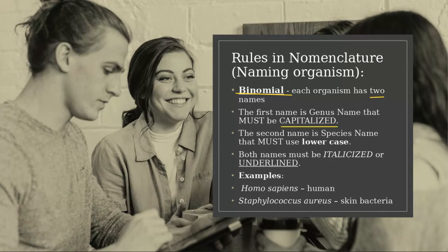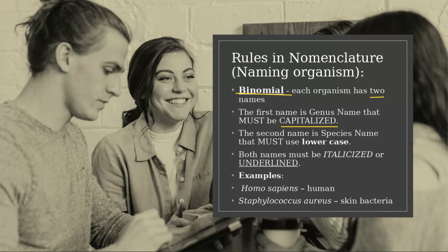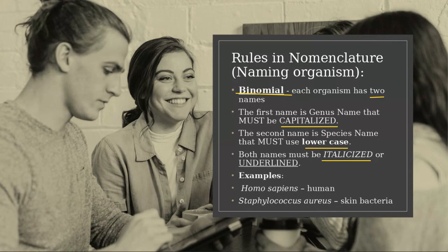The first name starts with a capital letter, just like our own names start with a capital letter. The second name is the species name, and it starts with lowercase. So the first name starts with a capital letter and the second name starts with lowercase. Both names must be italicized or underlined — you choose one of these, not both.